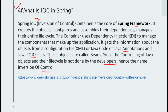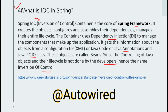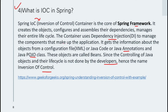When Spring comes into the picture, we no longer need to think about creating, maintaining, assembling, or configuring dependencies — everything is managed by the IoC container. The container uses dependency injection; the annotation typically used for dependency injection is `@Autowired`. Configuration can be provided as XML files, Java code, or annotations.